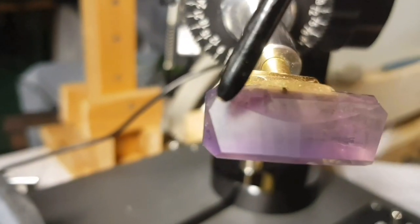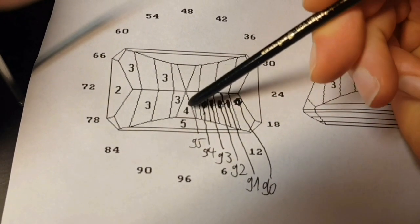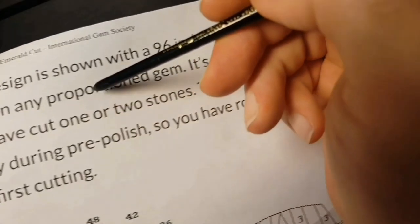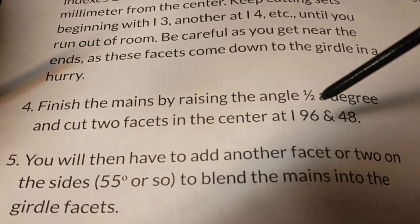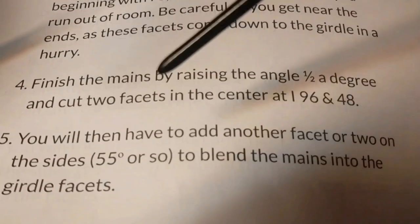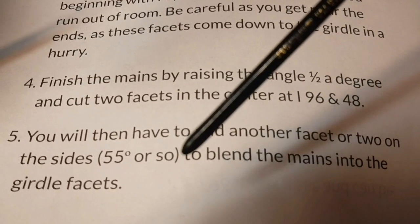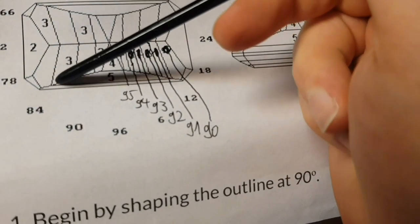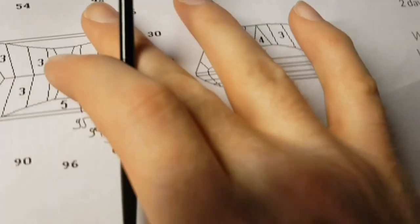As you can see, the next step is to cut these little facets with number four on both sides by raising the angle a half or a degree and cut two facets in the center at 96 and 48. After this, you will then have to add another facet or two on the sides at 55 degrees or so to blend the mains into the girdle facet. We're cutting these big facets here to blend the mains into the girdle outline.